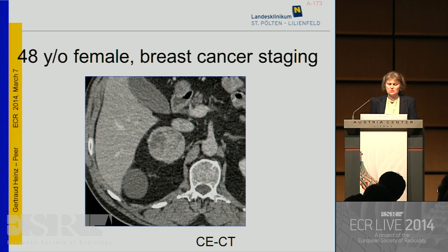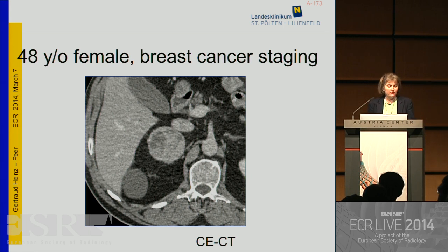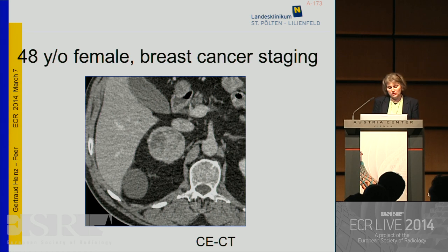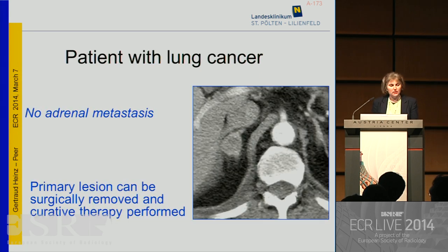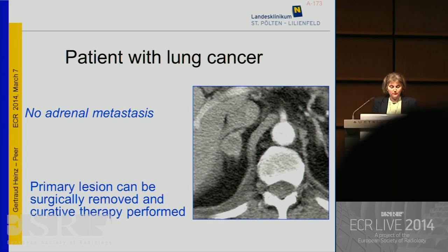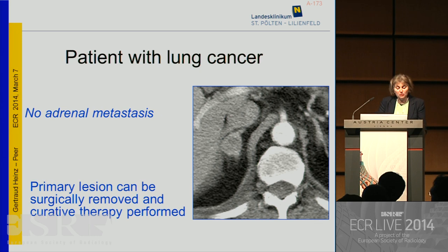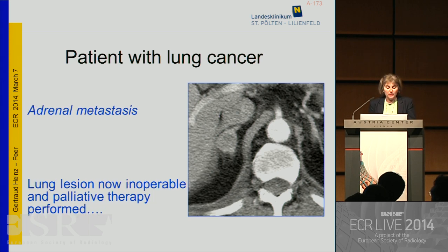When it comes to the practical approach of characterizing adrenal lesions, let me start a little bit unconventionally with a female patient diagnosed with breast cancer. On a staging CT, a right adrenal mass was diagnosed. It is of major impact, according to the therapeutic approach, if this lesion proves to be benign or malignant. Or in this patient with underlying lung cancer, if this small right adrenal mass proves to be no metastasis, the primary lesion can be surgically removed and a curative therapy can be performed. However, if this small lesion proves to be a metastasis, the lung lesion is inoperable and a palliative therapy has to be performed.